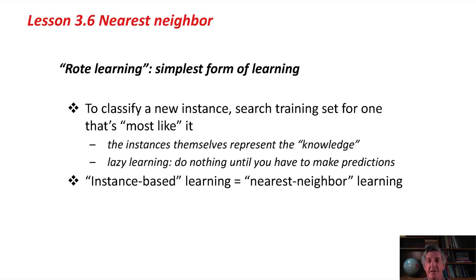To classify a new instance, it searches the training set for one that's most like the new instance. The representation of the knowledge here is just a set of instances. It's a kind of lazy learning. The learner does nothing until it has to do some predictions. Confusingly, it's also called instance-based learning. Nearest neighbor learning and instance-based learning are the same thing.